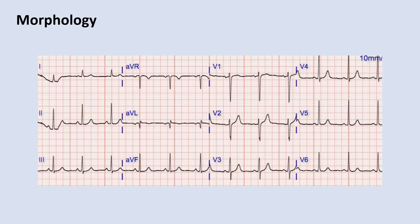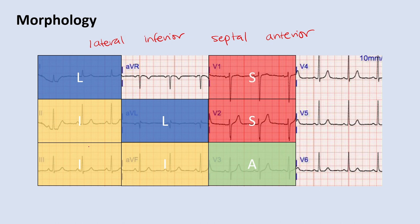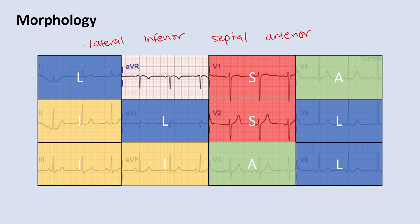Before moving on to specific EKG findings, you need to know which leads correspond to which area of the heart. The lateral leads are lead 1, AVL, V5, and V6. Inferior leads are 2, 3, and AVF. Septal leads are V1 and V2. Anterior leads are V3 and V4. A mnemonic a medical student taught: 'big lie, little lie, ass backwards, and all' — all the ones with an L are your lateral leads. This helps you remember which leads correspond to which area of the heart.